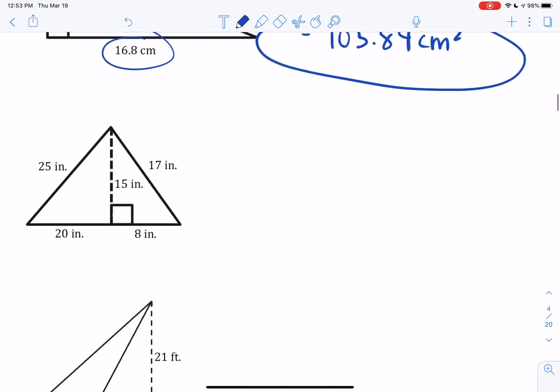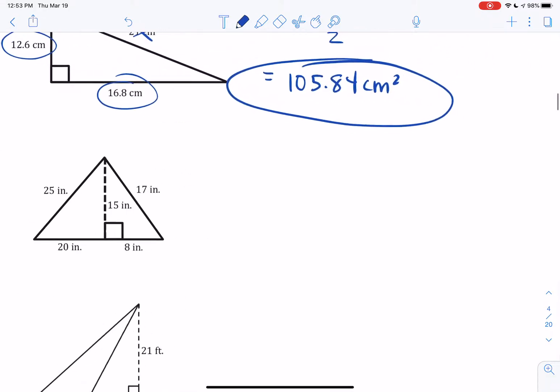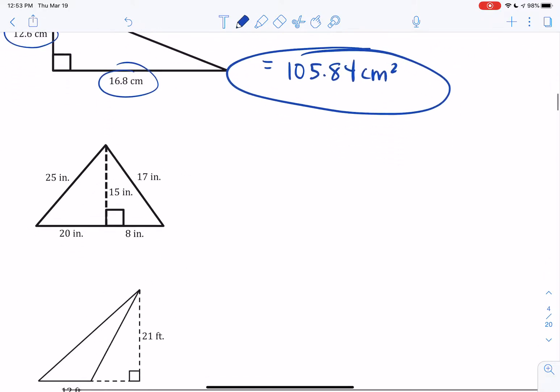Question number two, this one is a little bit different type of triangle. Number one was a right triangle. This is an acute triangle. And what you notice is we actually have a left triangle and a right triangle. So I could, technically, I could find the area of this triangle first using a base of 20 and a height of 15. And then I could find the area of this triangle separately using a base of 8 and a height of 15.